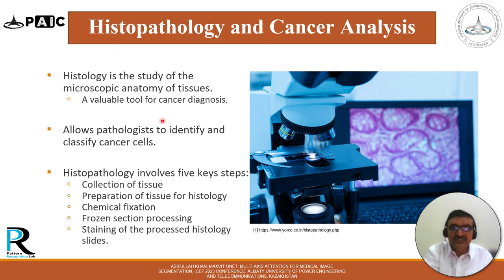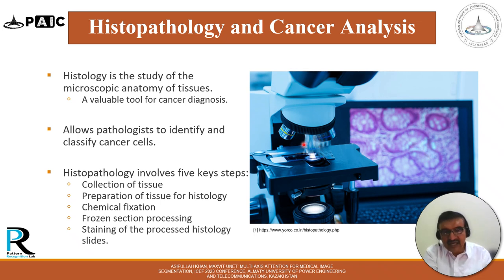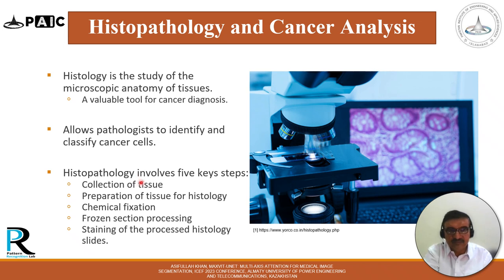Traditionally, histopathology is considered a very authentic technique for cancer analysis. Histopathology is the study of microscopic anatomy of tissues and a valuable tool for cancer analysis — we study tissue through a microscope. Histopathology allows pathologists to identify and classify cancer cells. It involves five key steps: collection of tissue, preparation of tissue for histology, chemical fixation, frozen section processing, and staining of the histology slide.